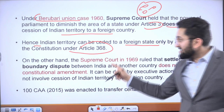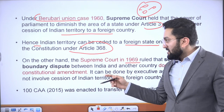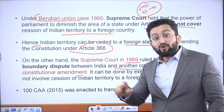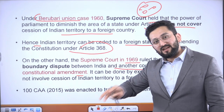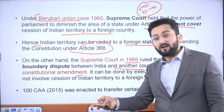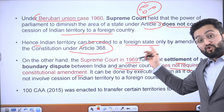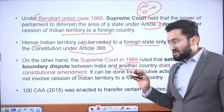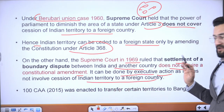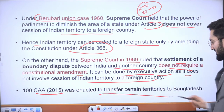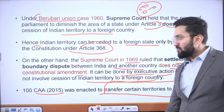On the other hand, the Supreme Court in 1969 ruled that settlement of a boundary dispute — like a land swap — does not require a constitutional amendment, because it does not amount to cessation of territory. When there is a boundary dispute to settle through land swap, it can be done by executive action. The 100th Constitutional Amendment Act of 2015 enacted the transfer of certain territories to Bangladesh, settling the border confusion with Bangladesh.